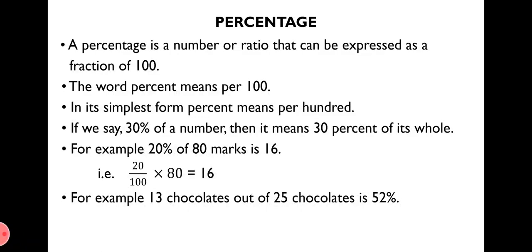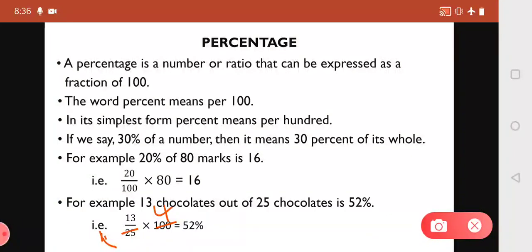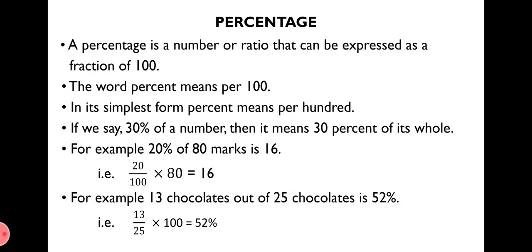Another example: 13 chocolates out of 25 chocolates is 52%. To convert a number into percent: 13/25 × 100 = 52%. Here you can reduce — 25 fours are 100 and 13 fours are 52. So this way, using percent, if percent is given we can find the number, and if a number is given we can find the percent.